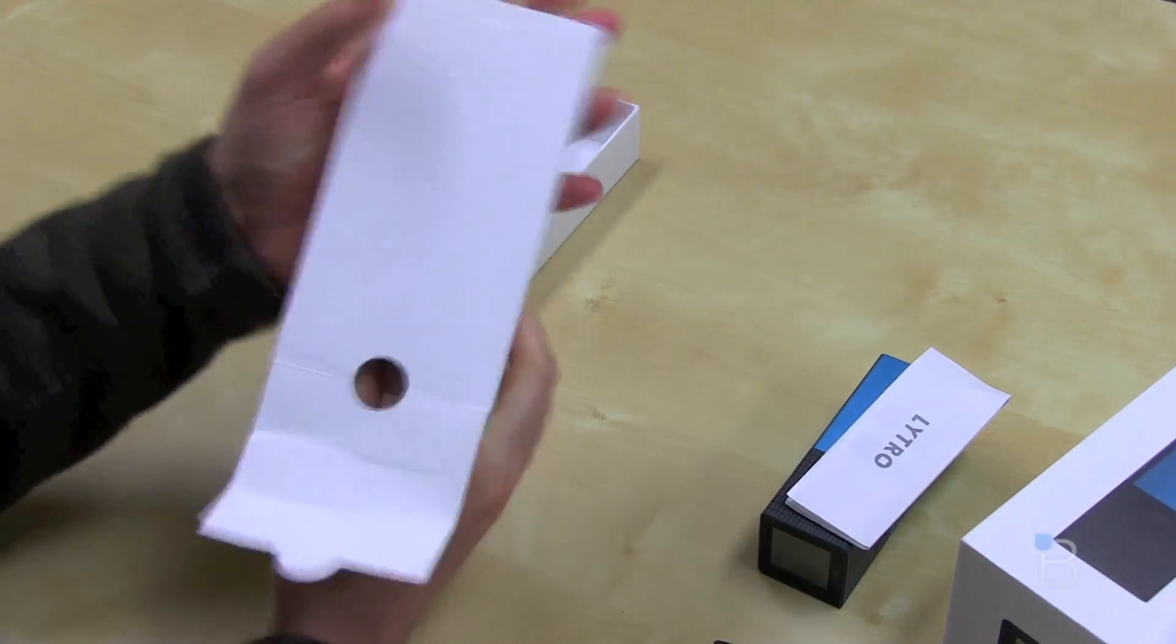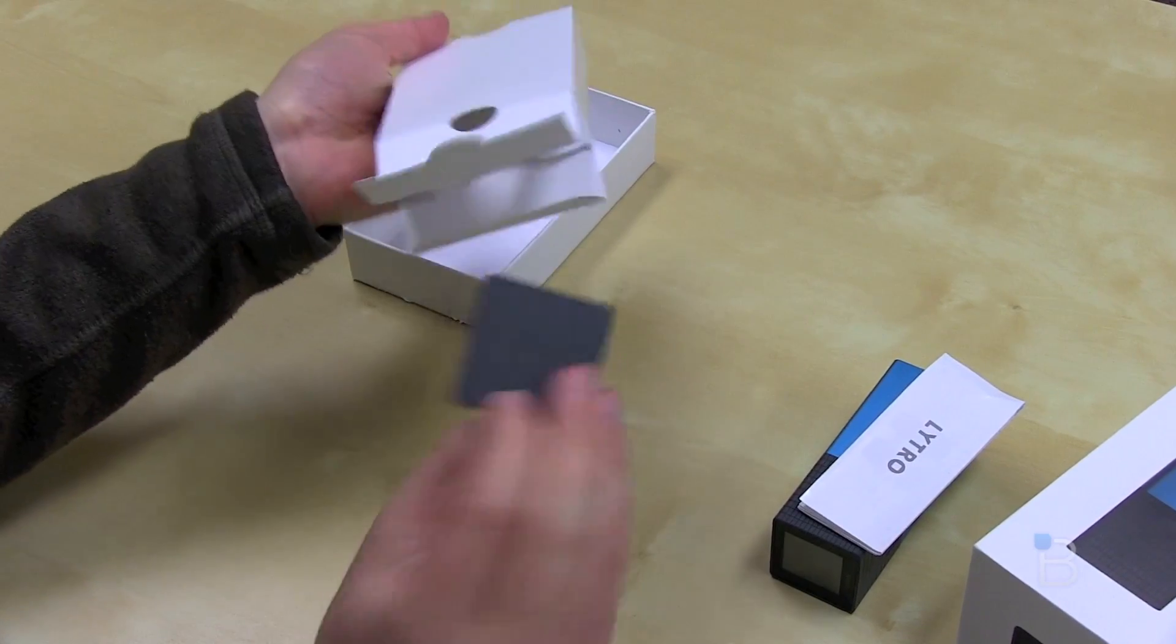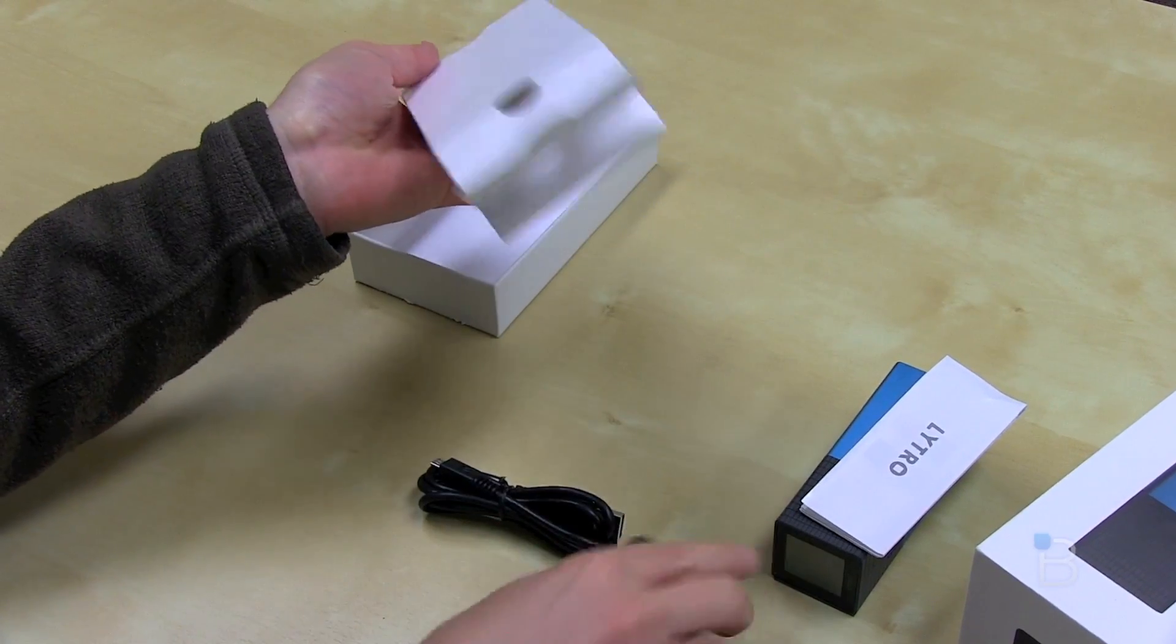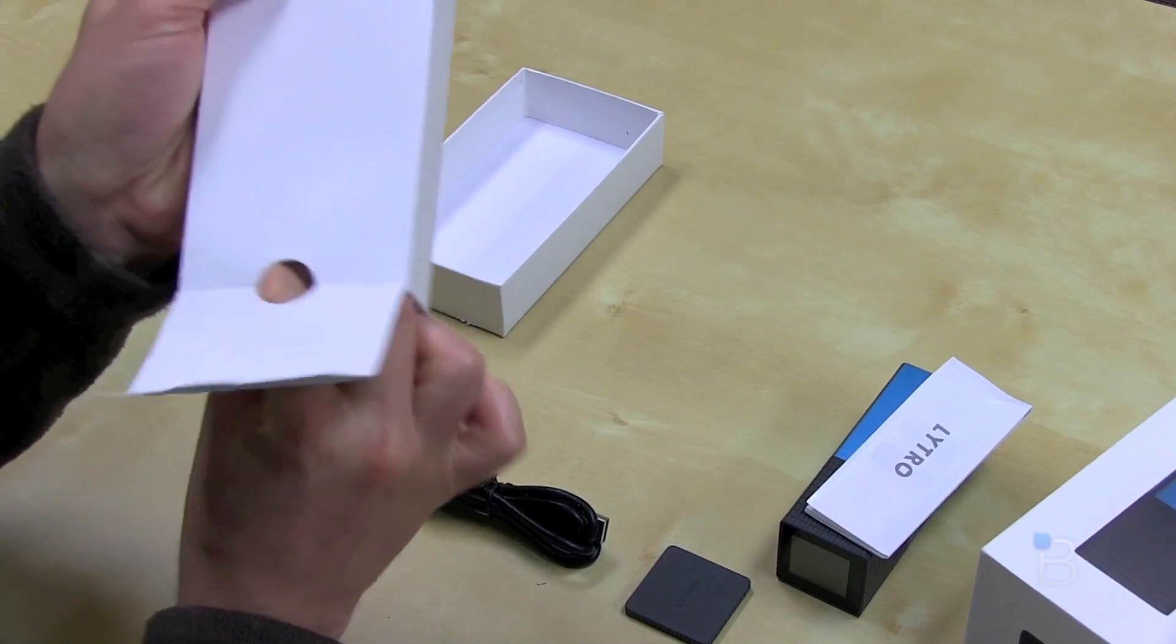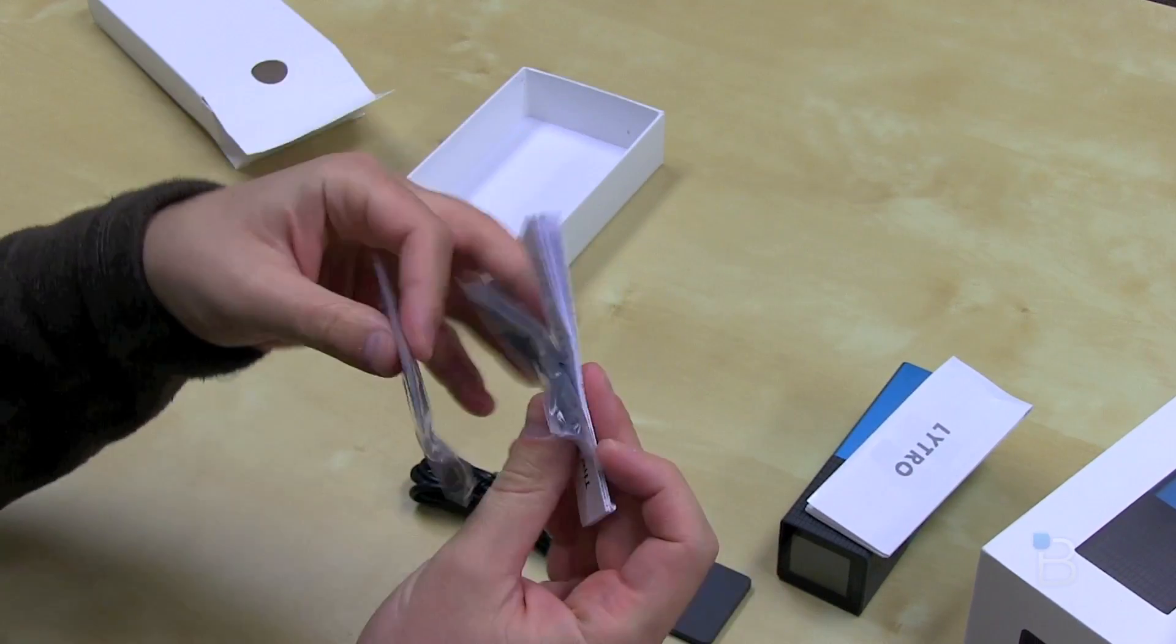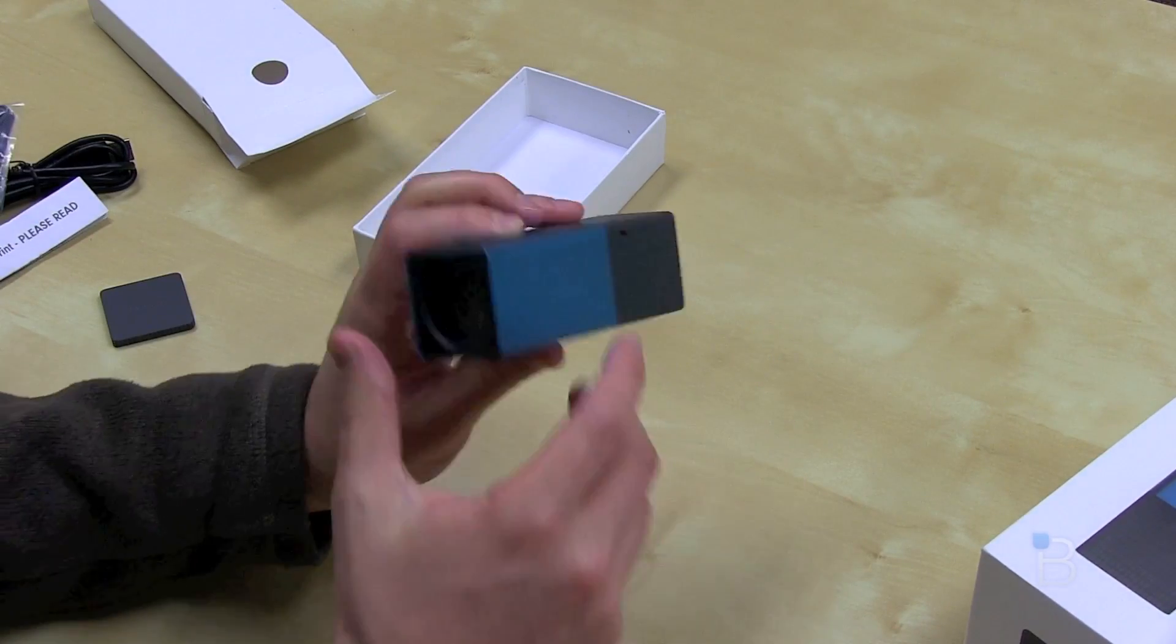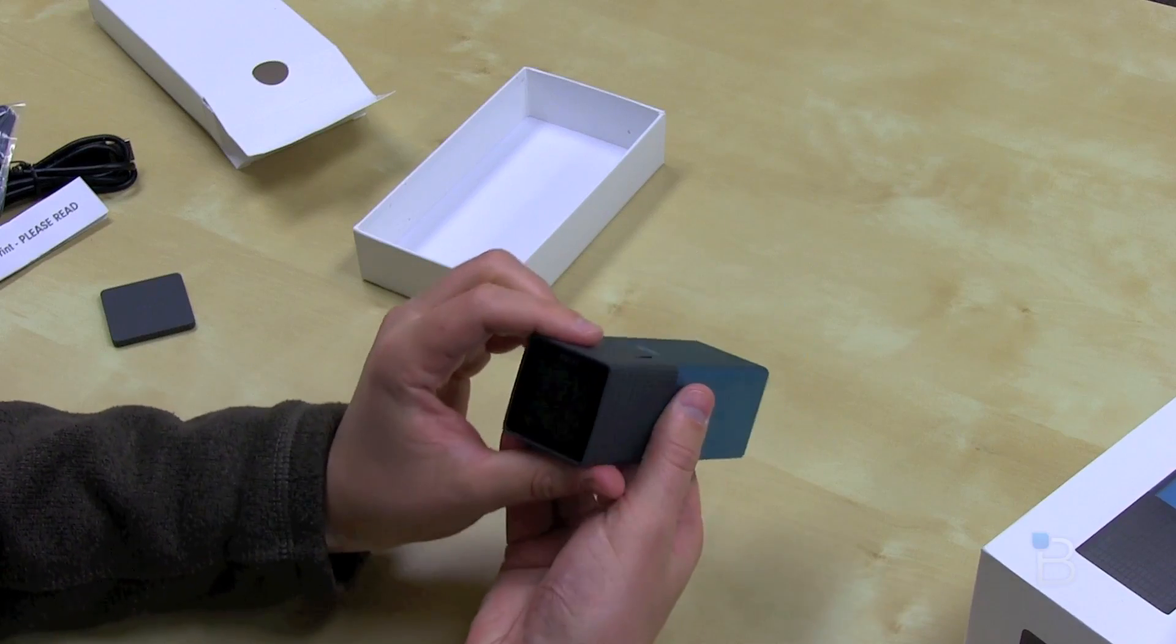So what do we have? We've got a micro USB cable. We've got a magnetic cover for the lens and we have a wrist strap and cleaning case. Great, push all that business off to the side. Let's take a look at the Lytro and there's a lot to talk about with this guy.